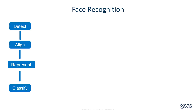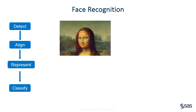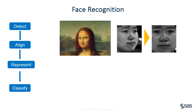Face detection determines whether a human face appears in a given image, and if there is, it locates the face to return a bounding rectangle or square containing the face. Alignment, either based on a 2D or 3D model, rectifies faces into a canonical pose and scale so that the position of facial features relative to a fixed coordinate system can be further analyzed.